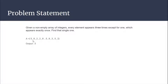For example, given this array, the answer is three because three is appearing only once, while the rest of the elements — two, eight, and five — are each appearing three times. So except for three, everyone else appears three times, and we have to print three because it is the unique element appearing exactly one time.